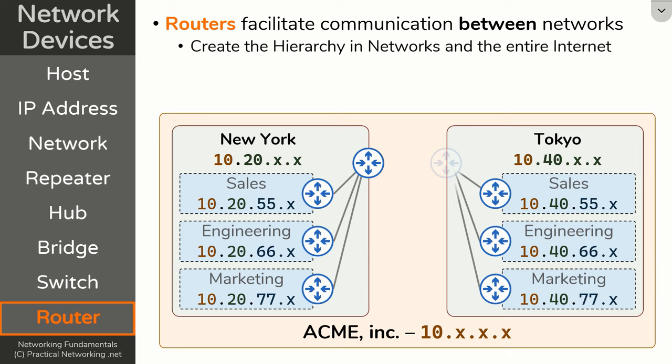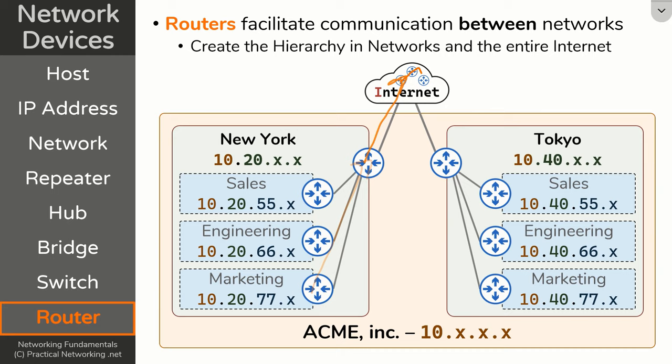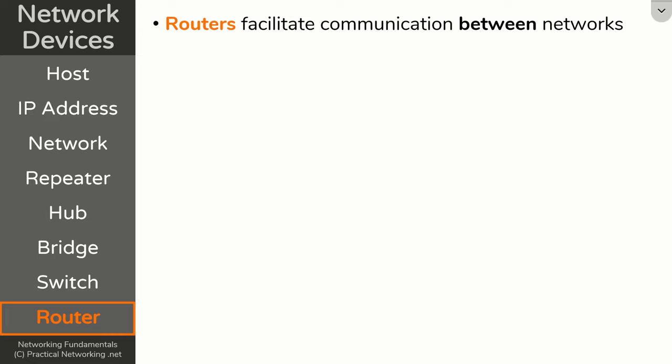The Tokyo office of the Acme Corporation is likely going to have a similar setup, and both of these routers are then likely going to connect to the internet. The internet is nothing more than a bunch of different routers itself. If a host on the marketing team wants to speak to a host on the engineering team in Tokyo, that host will send the data to the router, which will send it to the next router, through all the routers on the internet, which will finally send it to the Tokyo router and finally to the engineering team. That is how data flows across the internet, and that is the role routers play in making that possible.